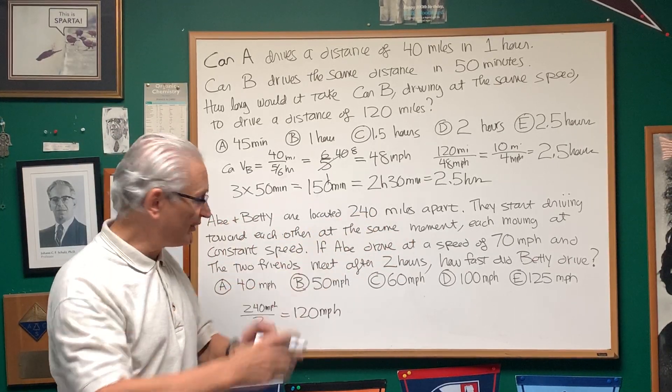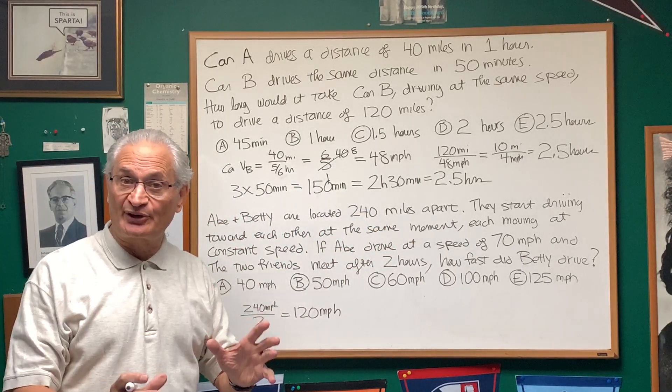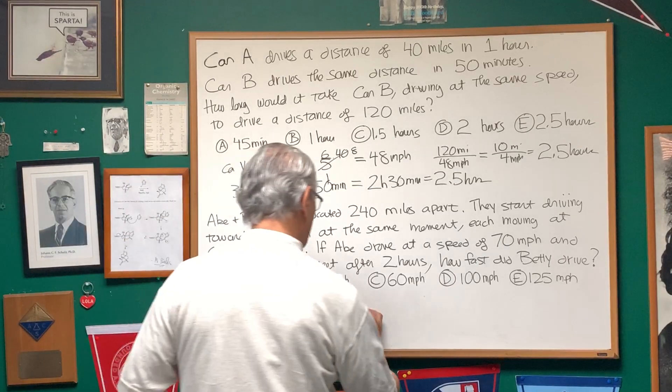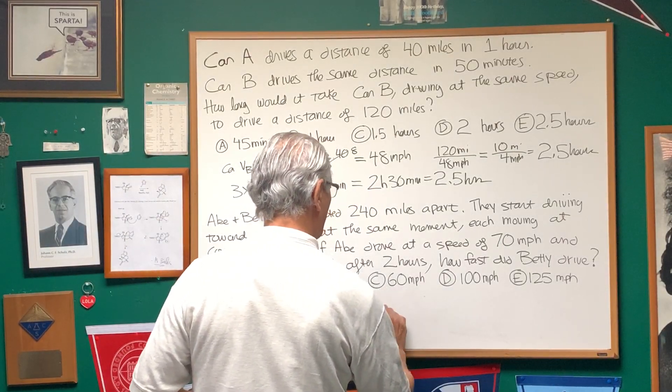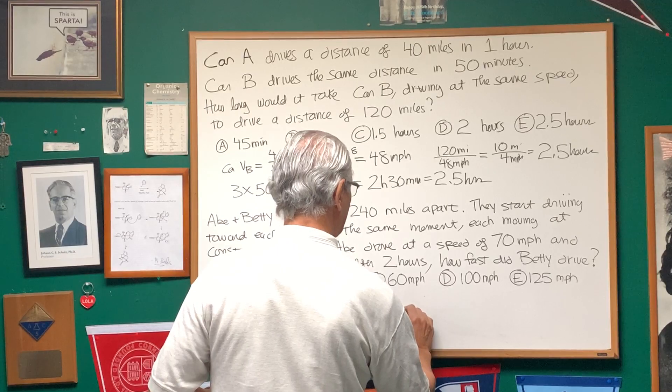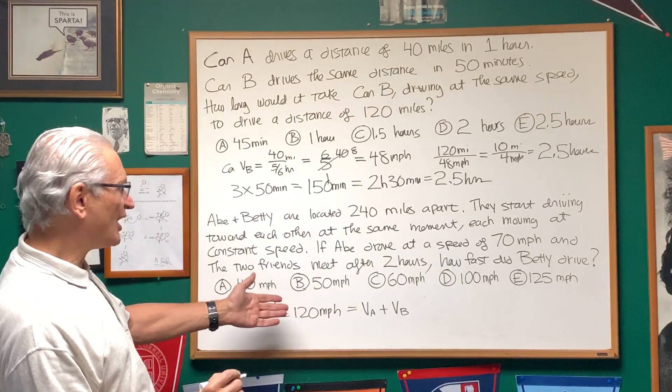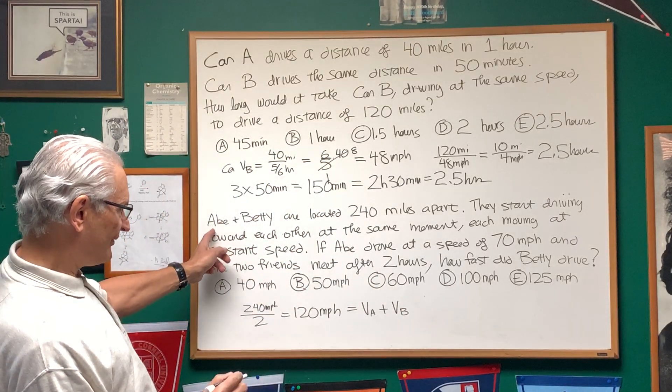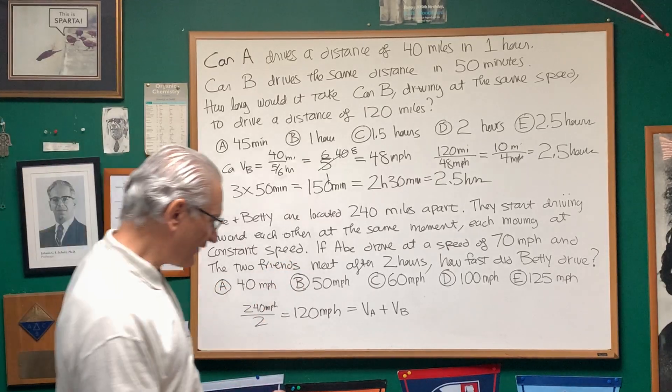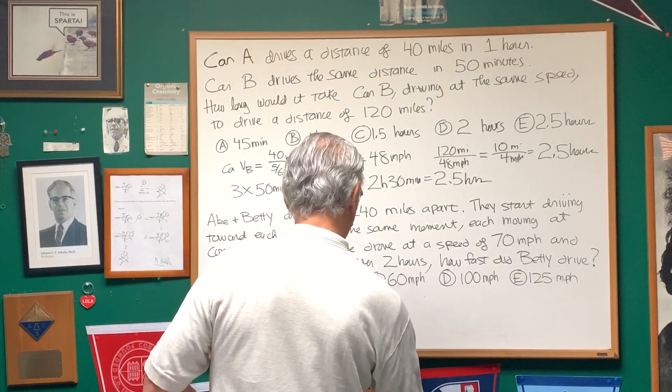Since the two cars are moving toward each other, that's going to represent the sum of the velocities of the two cars. So this is equal to the velocity of car A plus the velocity of car B. Well, we know that the velocity of car A is equal to 70 miles an hour.